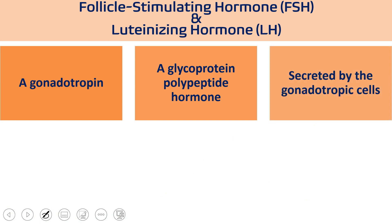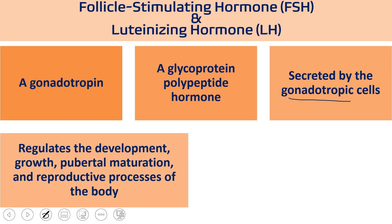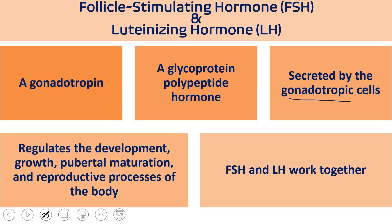Not only FSH and LH, but also HCG and TSH all belong to the same glycoprotein category. Both hormones are secreted by gonadotropic cells and regulate development, growth, pubertal maturation, and reproductive processes — from menstrual cycles to fertilization in females, and spermatogenesis and sperm transfer in males. FSH and LH work together synergistically, complementing each other's activity.